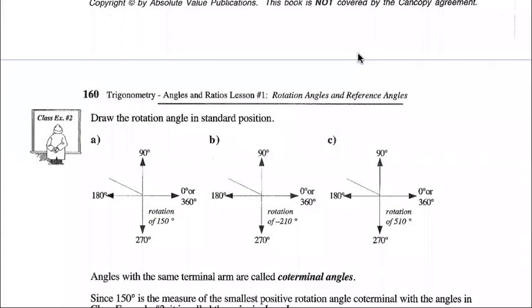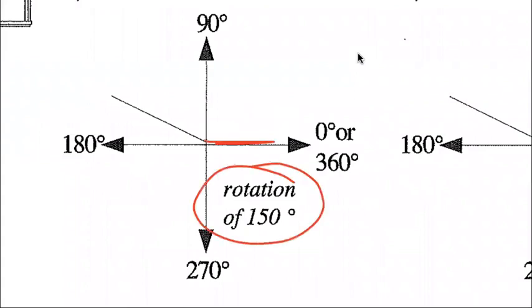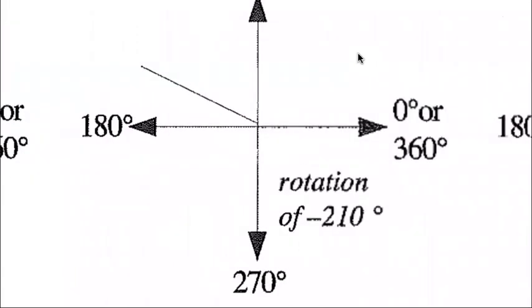Example two: draw the rotation angle in standard position. A rotation of 150 degrees — there's our initial arm, going like this, label that 150 degrees. Then it asks us to draw and label a reference angle for negative 210. Here's our initial arm, we go negative — counting clockwise: 90, 180, plus 30 more gives us 210 degrees.